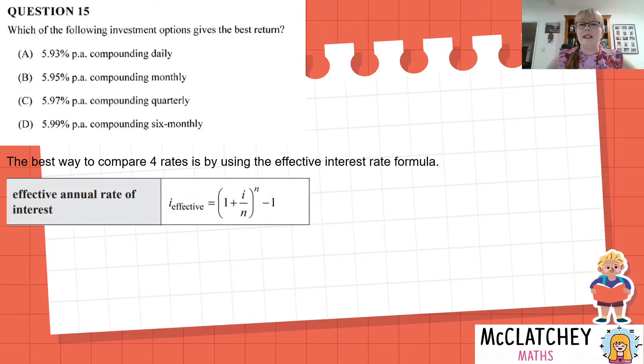So all we really need to do is apply this four times. Now you don't need to show working for multiple choice. You can simply write answers down. So if you know how to use your calculator, you can do that fairly quickly. So let's start with option A. We're simply substituting in 0.0593. Now we need to actually change that into a decimal by dividing the percentage by 100. And then we're going to divide that by 365 because it's compounded daily and our power is 365. So that's the only things we need to substitute into our formula on our calculator.